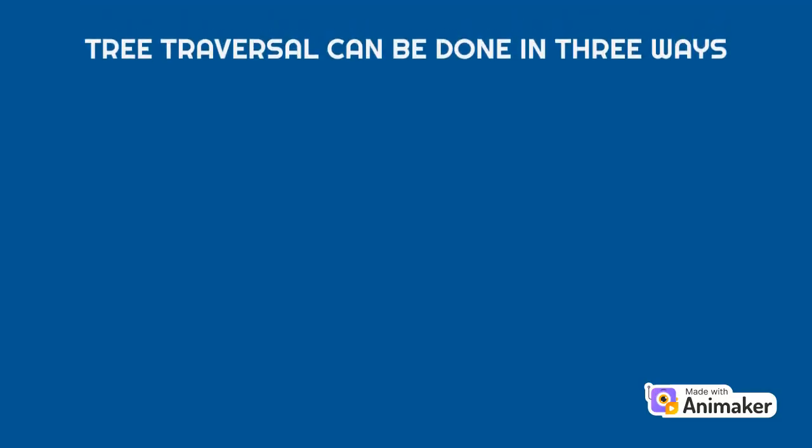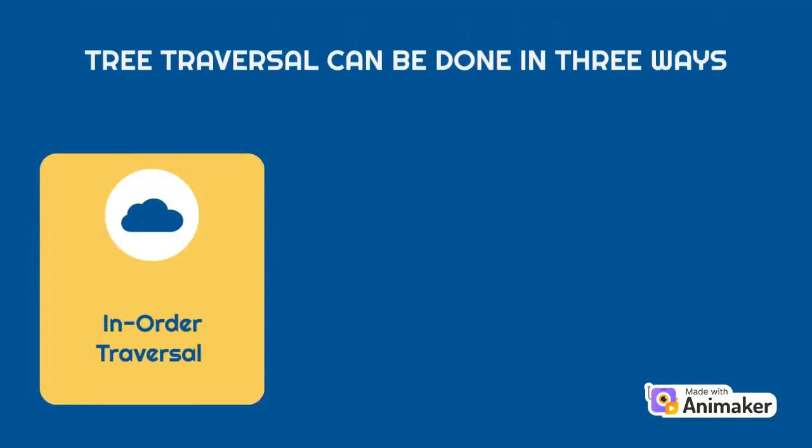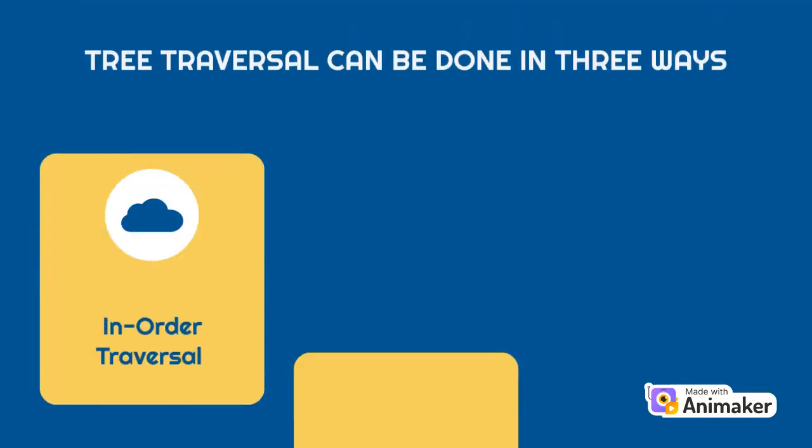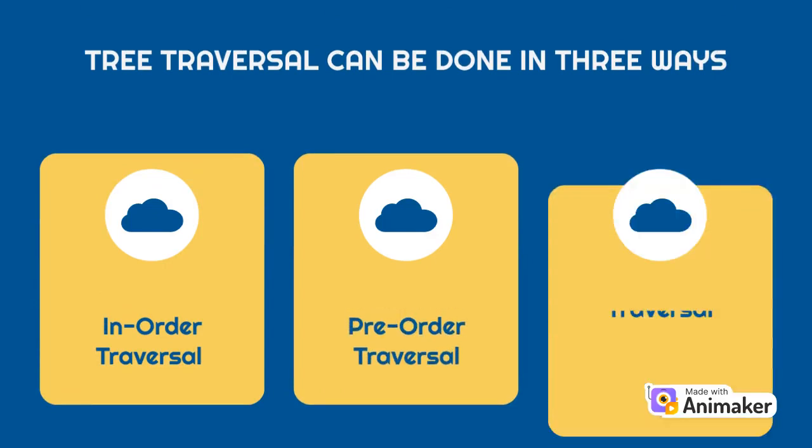Tree traversal can be done in three ways: in-order traversal, pre-order traversal, and post-order traversal.